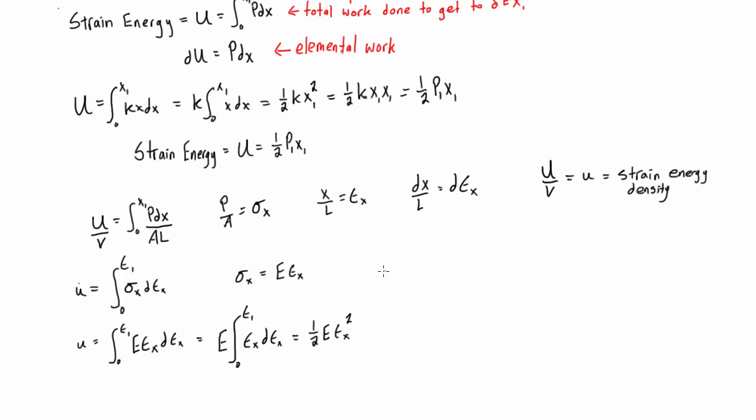Now with Hooke's law again, we can just rearrange this. So we have epsilon x is just going to be equal to normal stress over E, just like that.